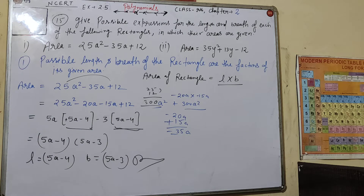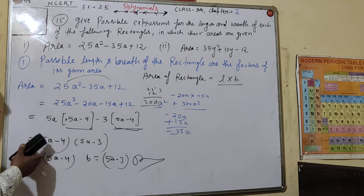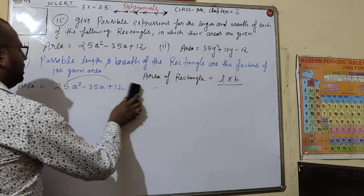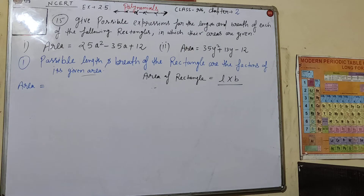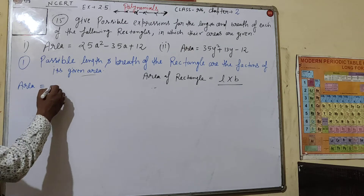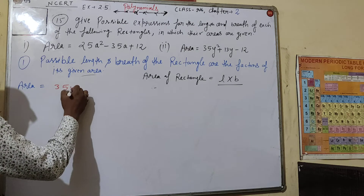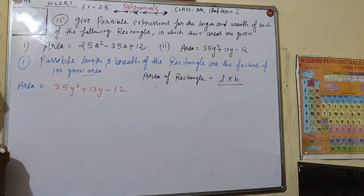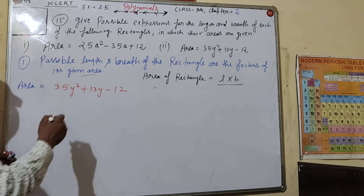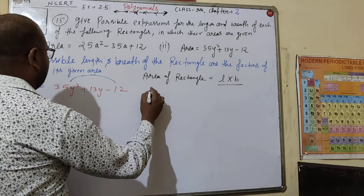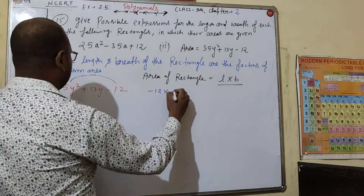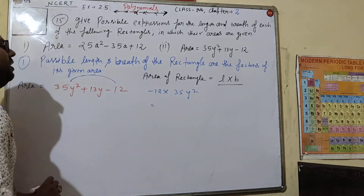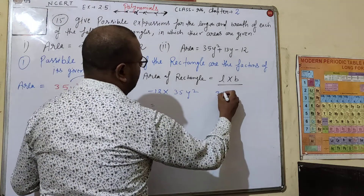Now for the second part, we have the expression 35y² plus 13y minus 12. We will do it the same way. First, we multiply the first number by the last number: minus 12 into 35, so we calculate 35 into 12.